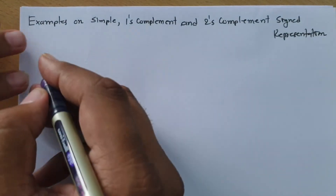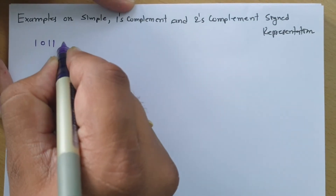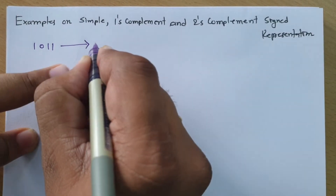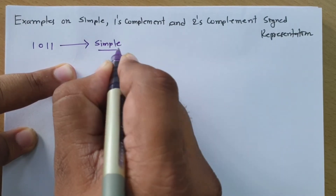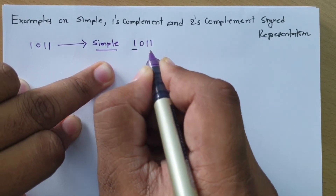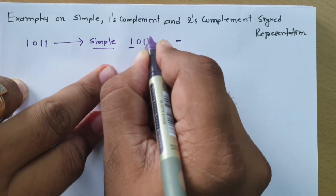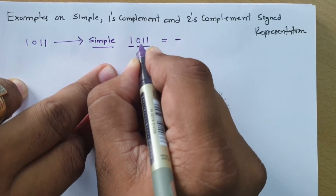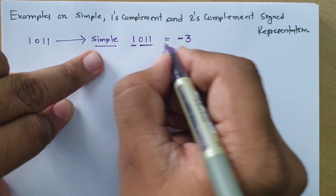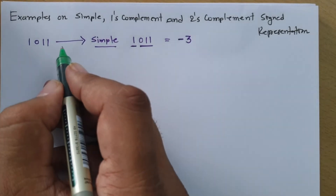So let us have the first question. We have been given the number 1011. If this number is in simple sign representation, then what is the corresponding decimal number? In simple sign representation, the first bit is one, so it indicates the number is negative. The rest of the bits are 011, which represents 3. So in simple sign representation, this number is minus 3.